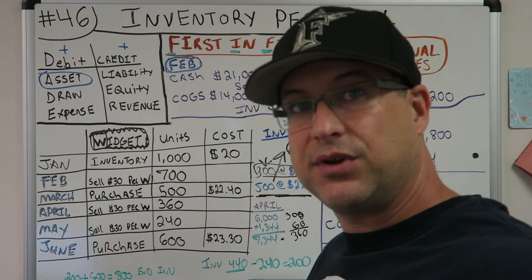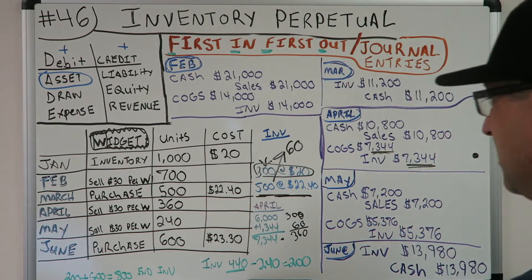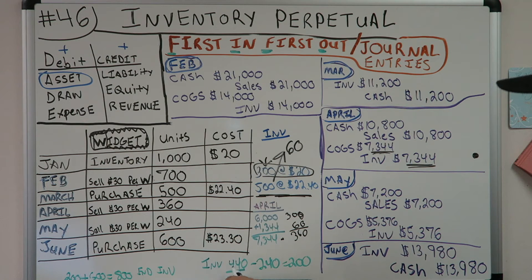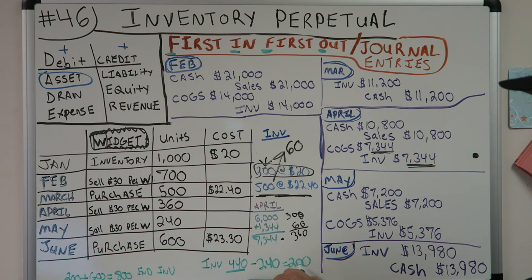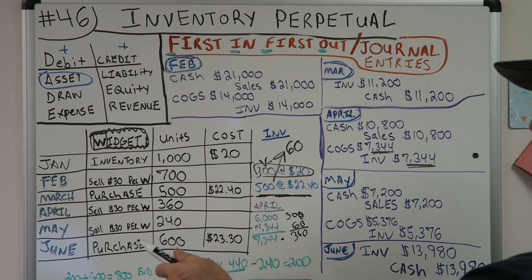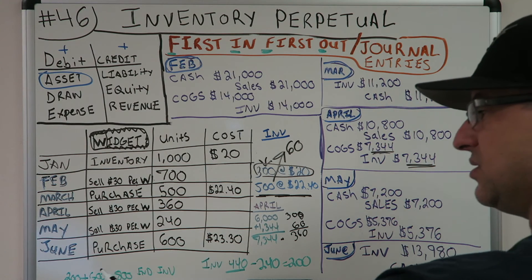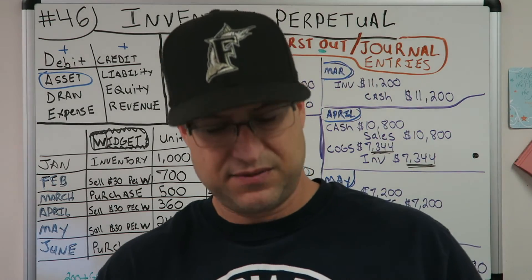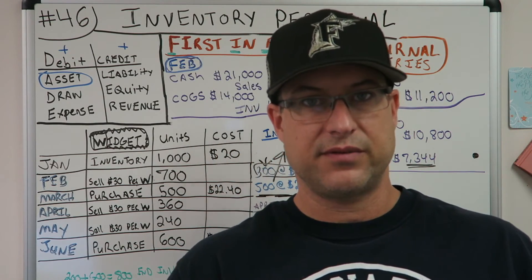If you're dying to get ahead: going into May we'd have 440 units in inventory, then we sell 240 more, leaving 200. Going into June we buy 600 more, so 200 plus 600 equals 800 in inventory. I'll be covering May and June in another video.